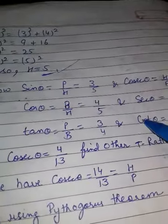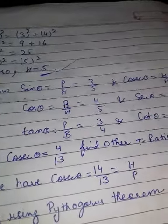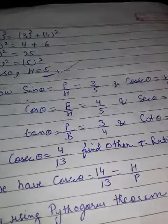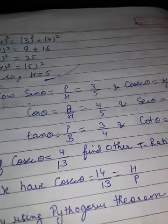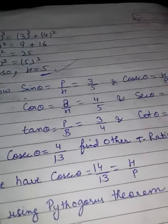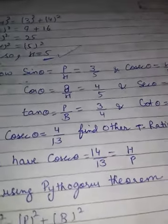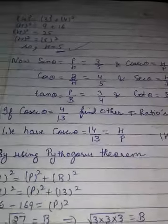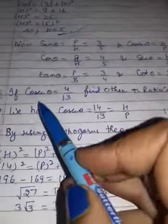Now the other ratios that are not given to you, you will find them. You can use the trick: Pandit Badri Prasad Har Har Bole Sona Chandi Tole.